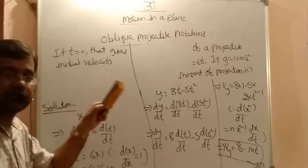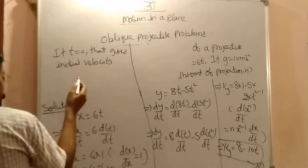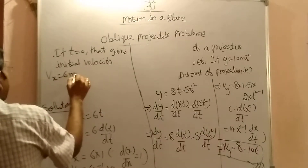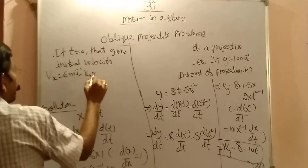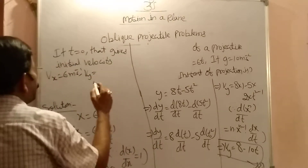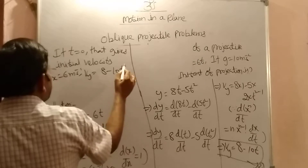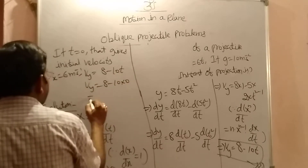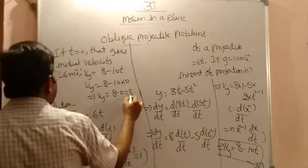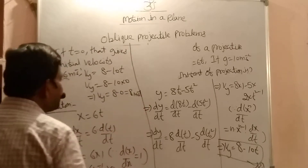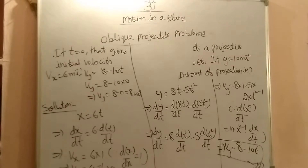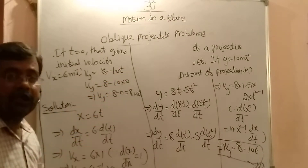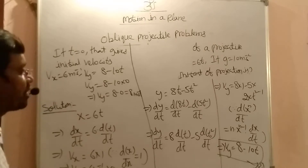The horizontal component vx is constant at 6 m/s. For vy: substituting t = 0 into vy = 8 - 10t gives vy = 8 - 10 × 0 = 8 - 0 = 8 m/s as the initial vertical velocity. If t = 1, we get 8 - 10 × 1 = -2 m/s, meaning reverse direction.